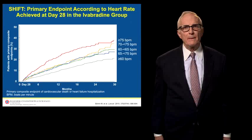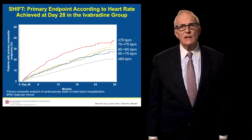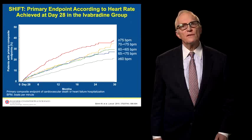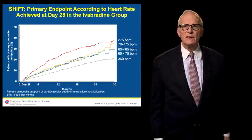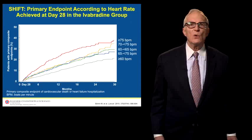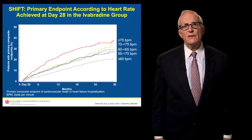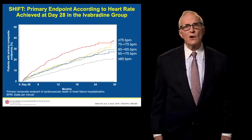When the entire SHIFT population is considered, outcomes depended in large measure on the final heart rate achieved. If heart rate was ≤60 beats per minute, outcomes were best. If heart rate at the end of the trial was greater than 75 beats per minute, outcomes were the worst — still better than before heart rate had been lowered, but clearly the impact of Ivabradine was its effect on heart rate. The greater the effect on heart rate, the greater the benefits to the patient.